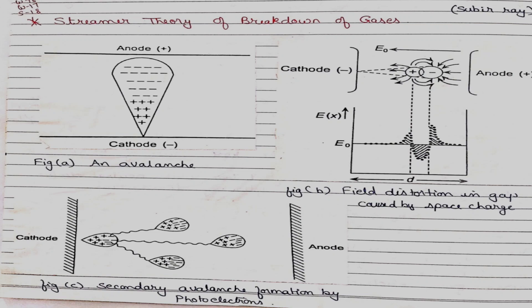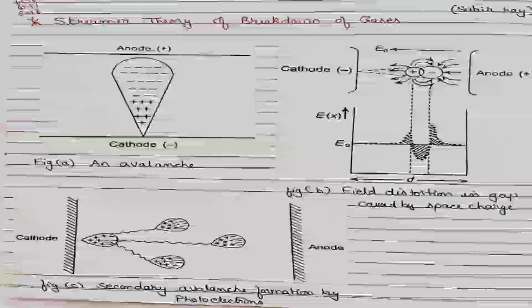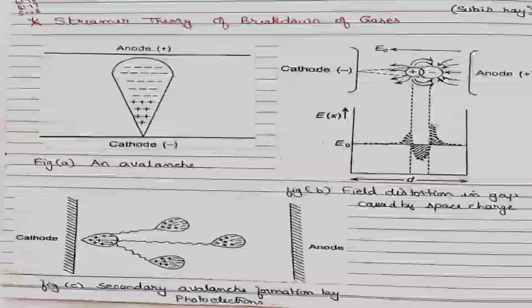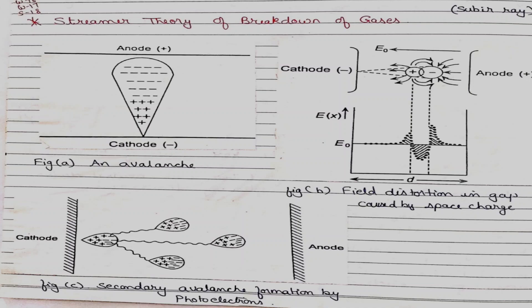According to Townsend's theory, it is not only the ionization process that takes place; it is also responsible for the breakdown of gases through the process of formation of photons and space charge within an avalanche. Streamer's theory goes beyond simple ionization alone.